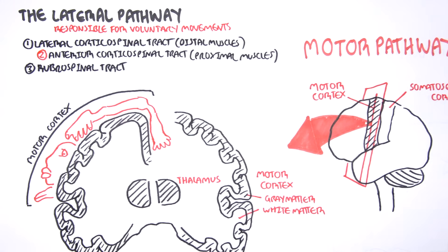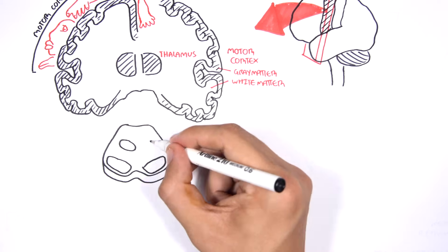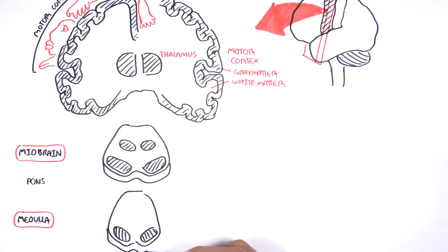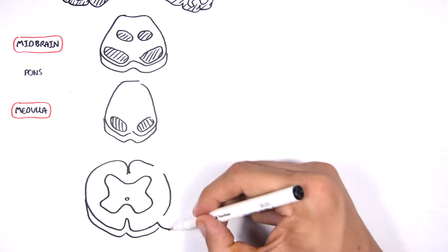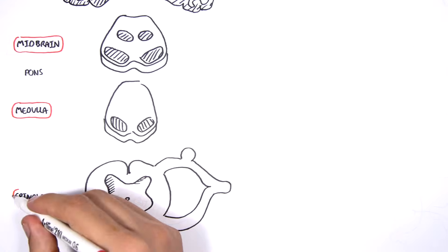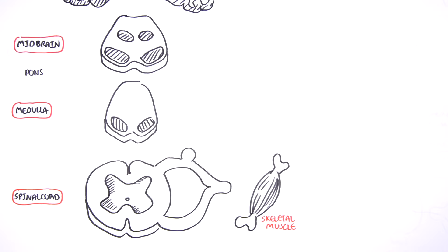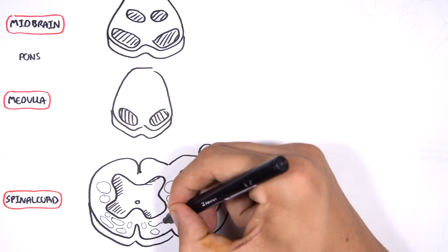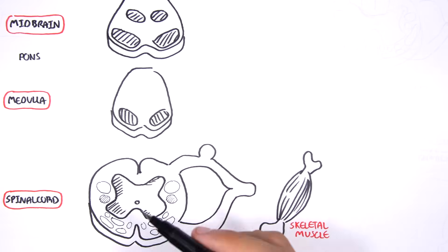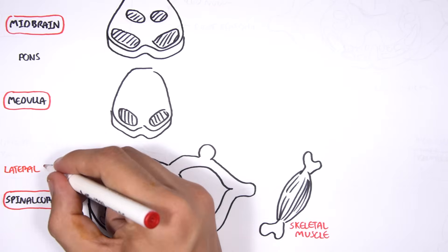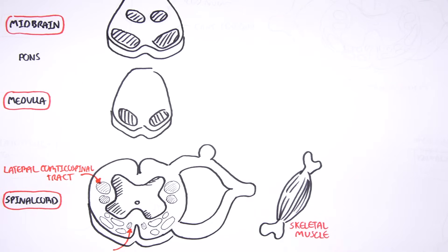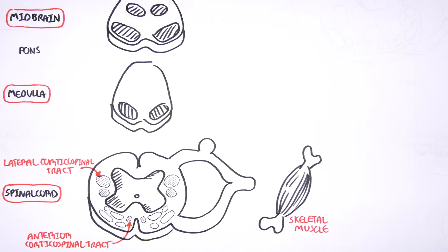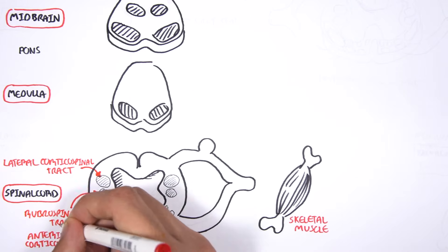Before looking at these tracts, let us learn some other important structures involved. Here I am drawing the midbrain. Below the midbrain is the pons, which I have not drawn. Then we have the medulla, and here is a section of a spinal cord — let us say a cervical segment — and here is a skeletal muscle for movement of the arm or forearm. Within the spinal cord, there are designated tracts: one for the lateral corticospinal pathway, the anterior corticospinal pathway, and the rubrospinal tract. There are many other tracts which we will look at later.